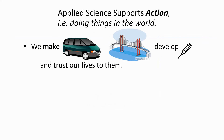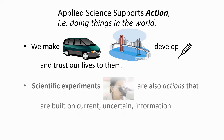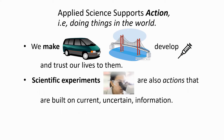So we've seen that applied science supports actions — that is, actually doing things in the world. Technology makes use of applied science when it builds cars and bridges, develops vaccines, and we trust our lives to them. This must be a very secure kind of knowledge, and it illustrates the rational practical goals of applied science. It's worth mentioning that scientific experiments, even those devoted to basic science and finding out the ultimate truth, are also actions built on current uncertain information.